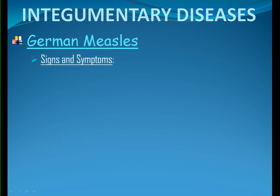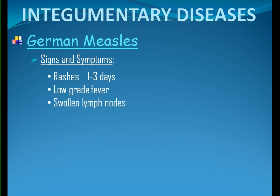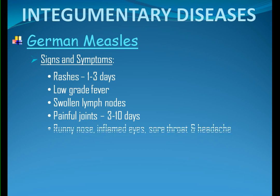Signs and symptoms: rashes that usually start on the face and neck then spread down to the whole body, lasting one to three days. A low-grade fever less than 39 degrees Celsius. Swollen lymph nodes in the neck and behind the ears. Painful joints that can last for three to ten days. Runny nose, inflamed eyes, sore throat, and headache.